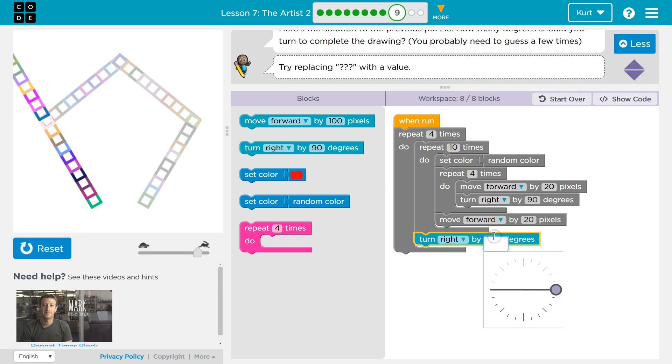Okay, so how much should we turn? Well, a square is 90, and look at this angle here. Oh, I see. So, you see the blue, the teal thing? That shows me how the artist is going to be turning.